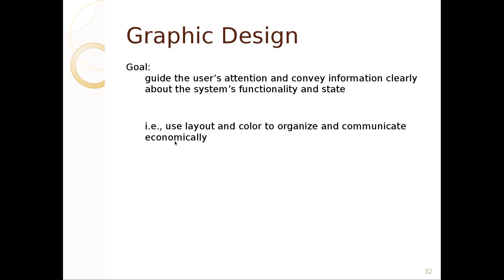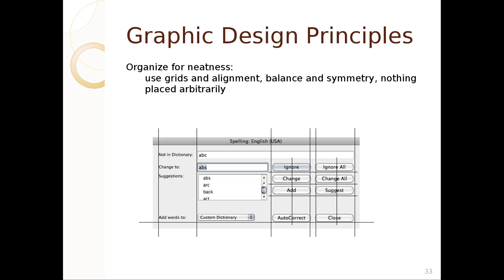First, for graphic design principles, you want to organize for neatness — use grids, alignment, balance, and symmetry. You don't want anything arbitrary. A lot of modern web pages draw a grid first and then place objects in it. You can see in the spell-checking dialog that we've got 'Ignore,' 'Change,' and 'Add,' and their counterparts 'Ignore All,' 'Change All,' and 'Suggest' — all text-centered down the middle and spaced equally apart.